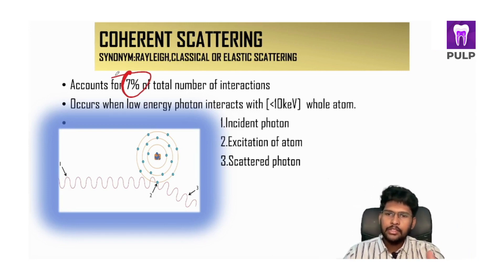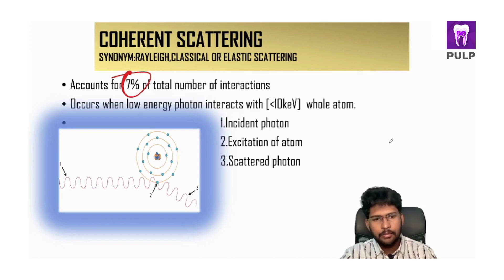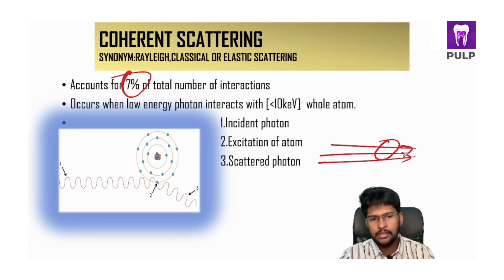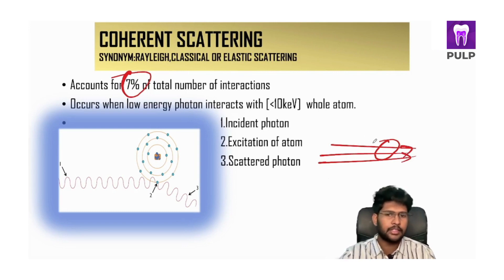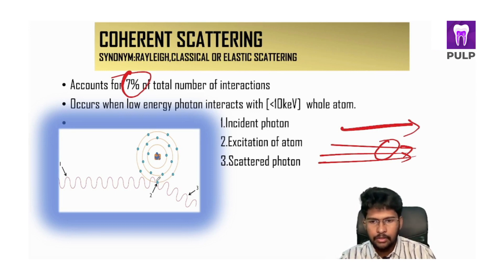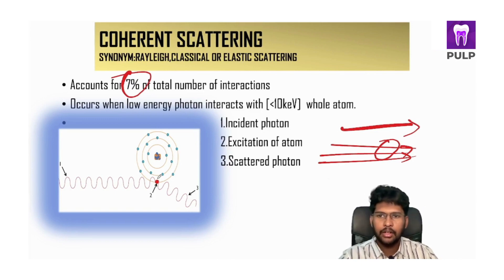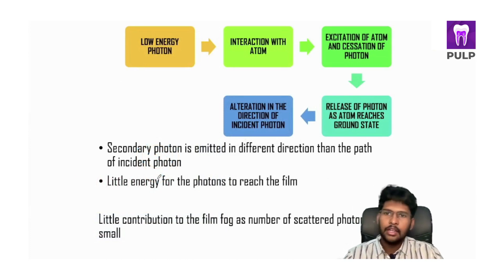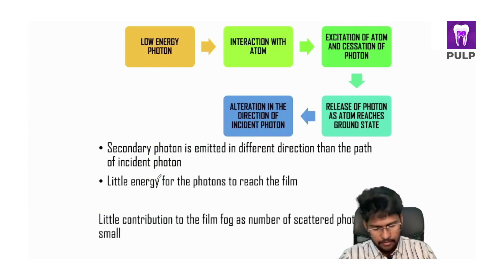Coherent scattering occurs when a low energy photon interacts with the whole atom. From the x-ray tube you have a large number of x-rays coming out, and not all x-rays will have the same intensity or energy — one might have higher energy and one might have low energy. When a low energy x-ray comes and hits an atom, specifically the outermost electron, this kind of interaction — coherent scattering — takes place. The low energy photon interacts with the atom, causing excitation of the atom and cessation of the photon.